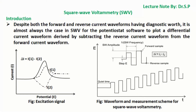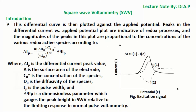Despite both the forward and reverse current waveforms having diagnostic worth, in square wave voltammetry the potentiostat software almost always plots a differential current waveform derived by subtracting the reverse current waveform from the forward current waveform. This differential curve is plotted against the applied potential. Peaks in the differential current versus applied potential plot are indicative of redox processes, and the magnitudes of the peaks are proportional to the concentrations of the various redox active species.